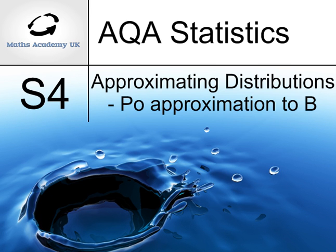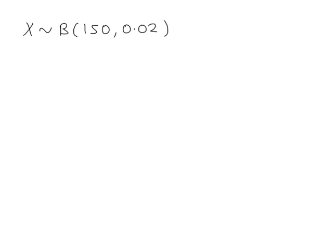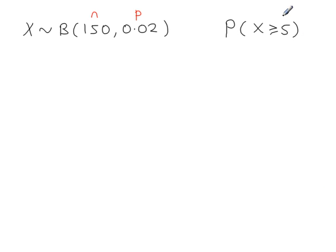Approximating distributions: the Poisson approximation to the binomial distribution. In a binomial distribution, x represents the number of successes in n trials, where p is the probability of success in one trial. In this example, we're looking for at least 5 successes in 150 trials, where there is a 2% chance of success in any given trial.